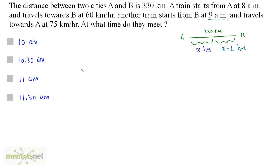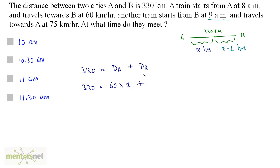The total distance between A and B is 330 kilometers, which equals the distance traveled by the first train from A to the meeting point plus the distance traveled by train B from B to the meeting point. Distance equals speed times time: train A travels at 60 kilometers per hour for x hours, and train B travels at 75 kilometers per hour for x minus 1 hours.